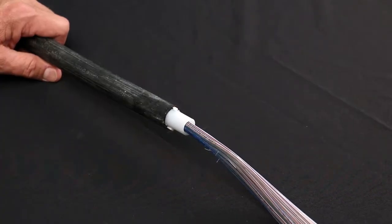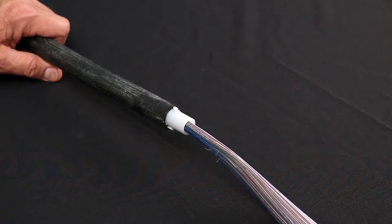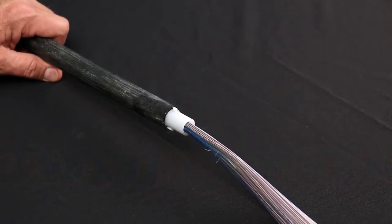Strip back the outer jacketing based on the equipment specification, plus an additional three quarters of an inch. Strip back the central tube, leaving three quarters of an inch exposed.